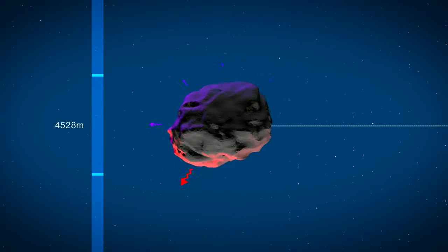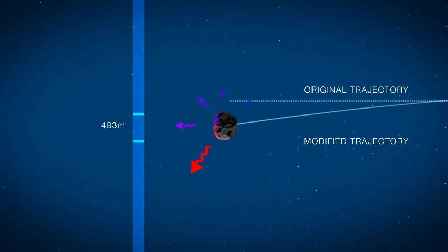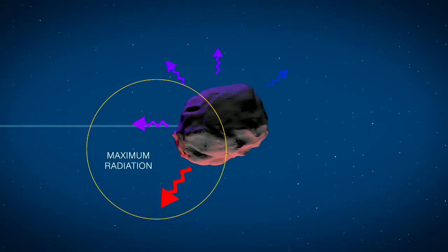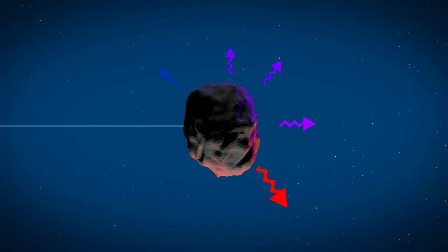On larger asteroids, this doesn't amount to much. But on small ones, it can make a pretty large change over time. Because the surface emits the most heat radiation at the end of the day, the direction the asteroid rotates can ultimately determine what happens in the long run.